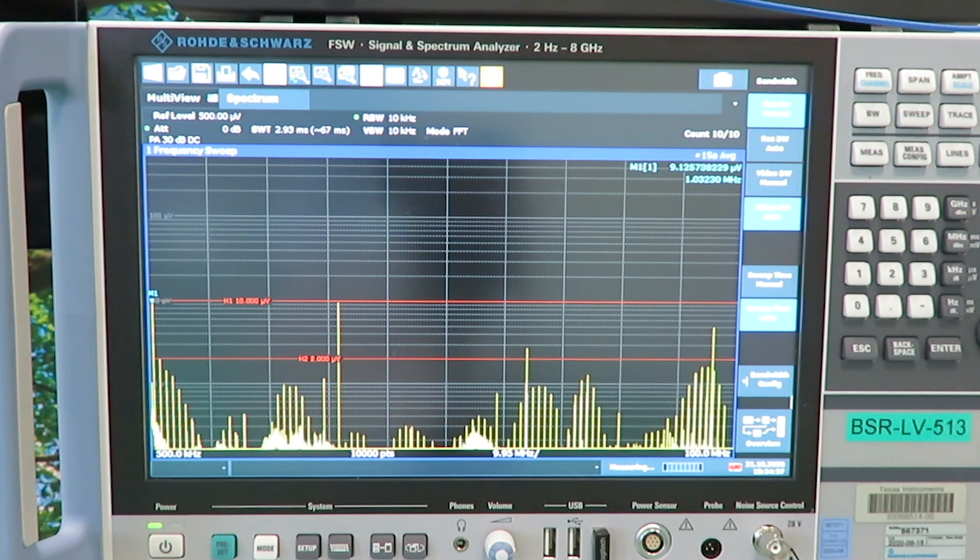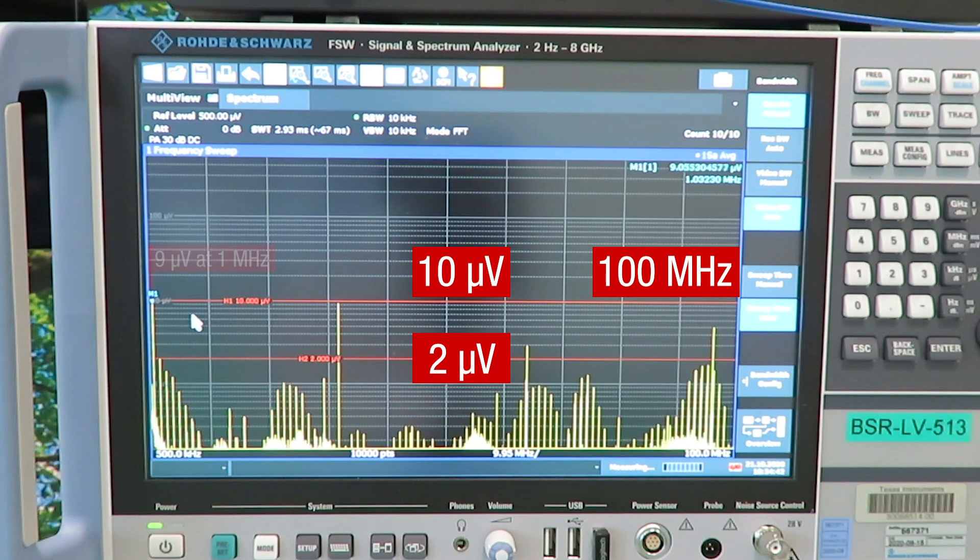Here we have the frequency spectrum of the output voltage of the DC-DC converter, with an amplitude of the main fundamental of just 9 µV and all its harmonics.